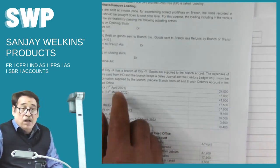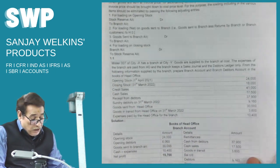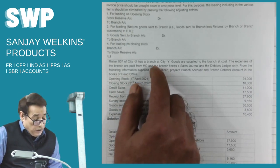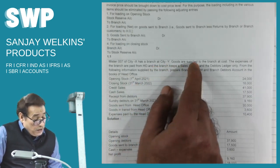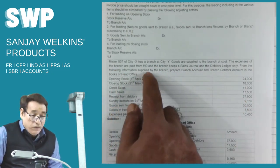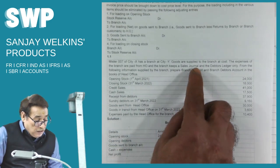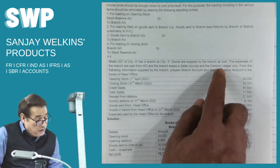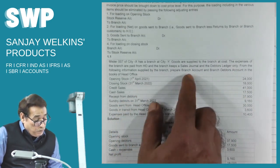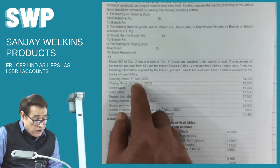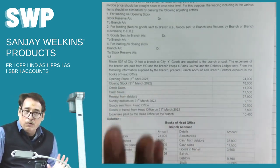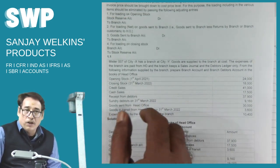We start question 1.1 — this is the debtors system. Mr. 007 of City X has a branch at City Y. Goods are supplied to the branch at cost and expenses of the branch are paid from the head office. The branch keeps a sales journal and a debtors ledger only. From the following information, prepare the branch account and branch debtors account.